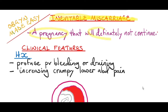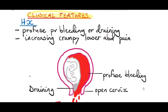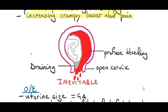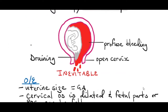An inevitable miscarriage is a pregnancy that will definitely not continue. Clinical features: a patient will come to you with a history of profuse pervaginal bleeding, which might be associated with clots or draining. The draining means that the membranes have ruptured and amniotic fluid is coming out. Increasing crampy lower abdominal pain simply means that the patient is having uterine contractions.